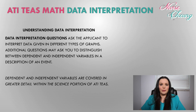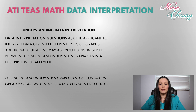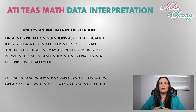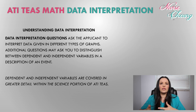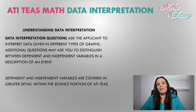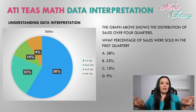To begin, we have to understand data interpretation. Data interpretation questions ask the applicant to interpret data given in different types of graphs. Additional questions may ask you to distinguish between dependent and independent variables and a description of an event. Dependent and independent variables are covered in greater detail within the science portion of ATI-TEAS, so I'll leave a link in the corner if you need a review of how they work within the math portion.